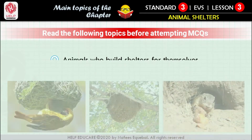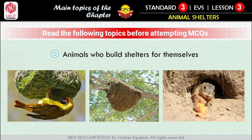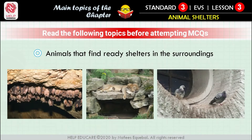Have you seen animals who build shelters for themselves? Animals like birds build nests to keep their young safe. They use things like grass, straw, twigs, cotton wool, and pieces of thread and string. The nests of all birds are not alike. Some insects such as honeybees also build their own shelters. There are also animals that find ready shelters in the surroundings.